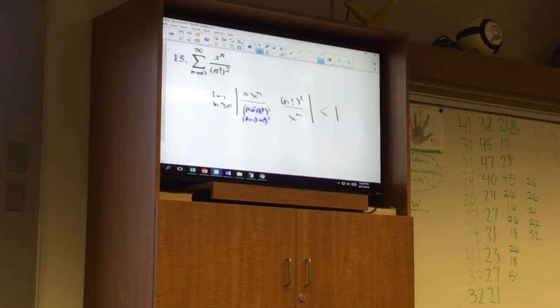So what happens when I have a times b quantity squared? Can I just call that a squared times b squared? Can I do that? Listen to my question. If I have quantity a times b squared, can I call that a squared times b squared? Absolutely you can. So what this becomes is n plus 1 squared times n factorial squared. Great. That cancels with that. This cancels with that.